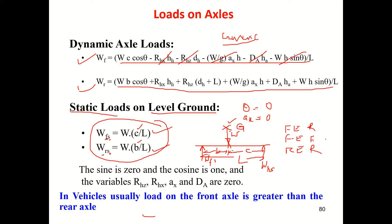Most front engine front wheel drive vehicles have the b value smaller than the c value, so the load on the front axle will be higher than on the rear axle. Earlier I demonstrated that many such cars have more load on the front axle. Why this is done will be understood when we study acceleration performance.